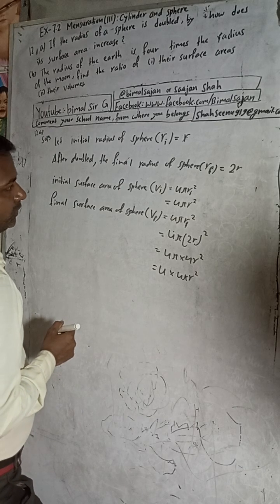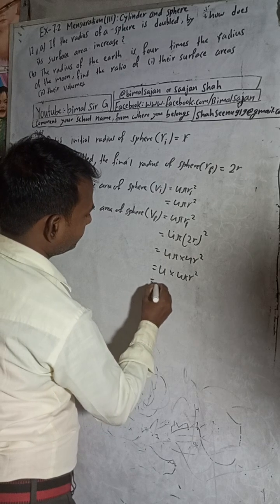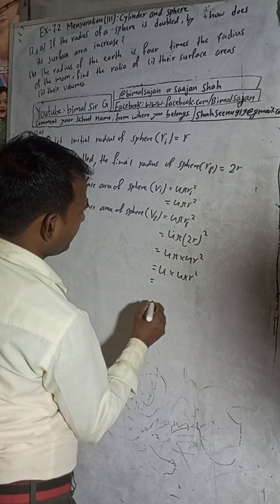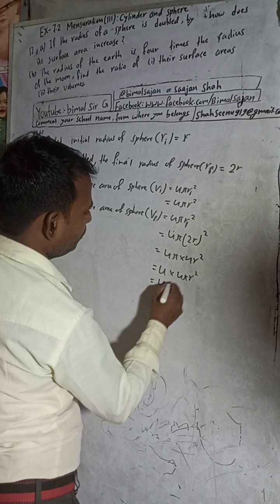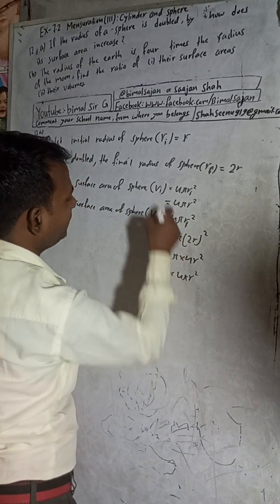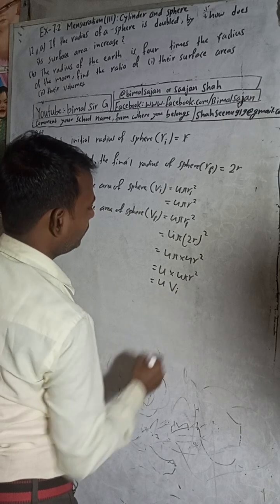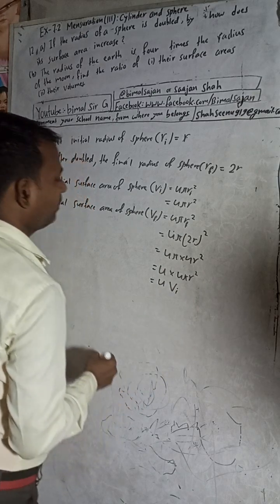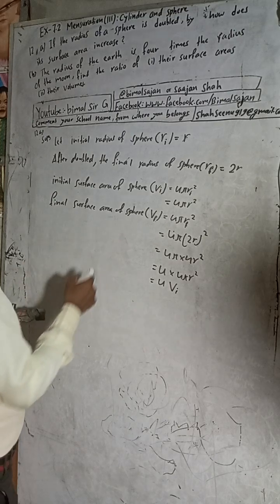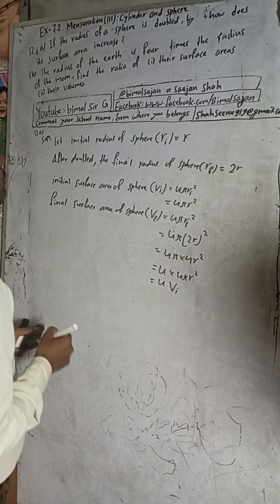So the final surface area equals 4 times the initial surface area. That is, final surface area = 4 × initial surface area.